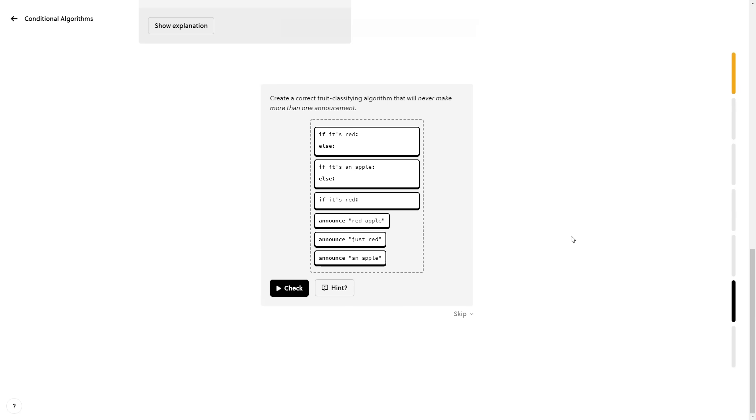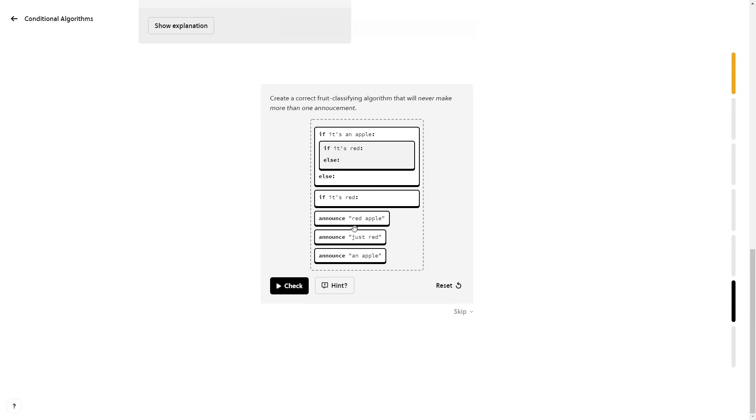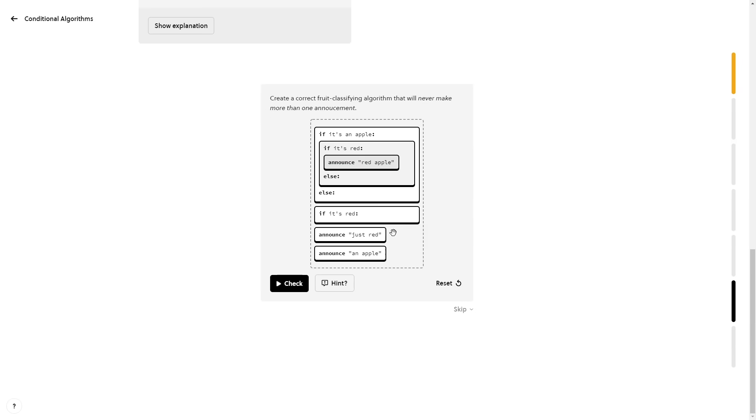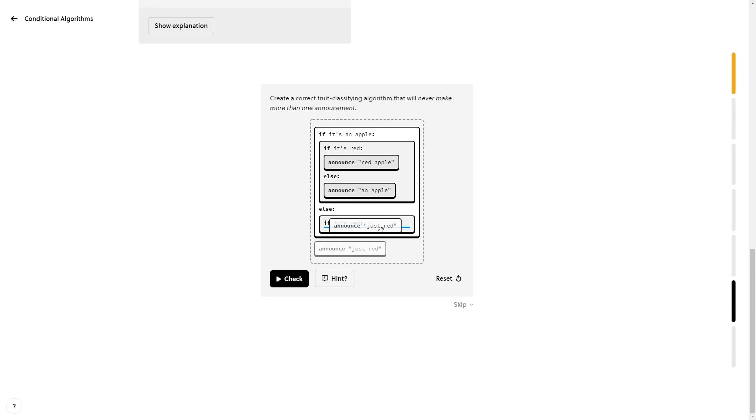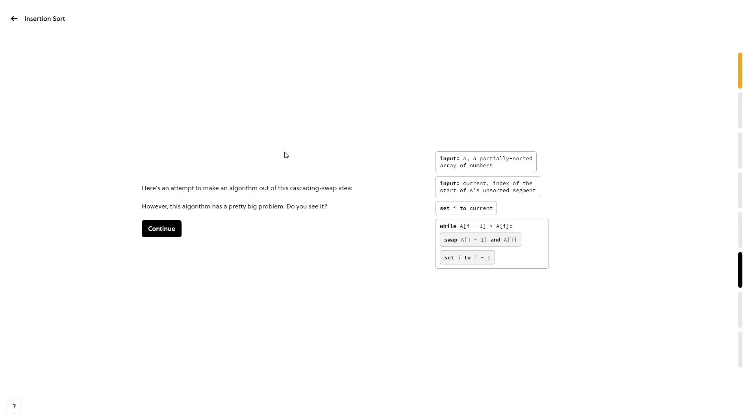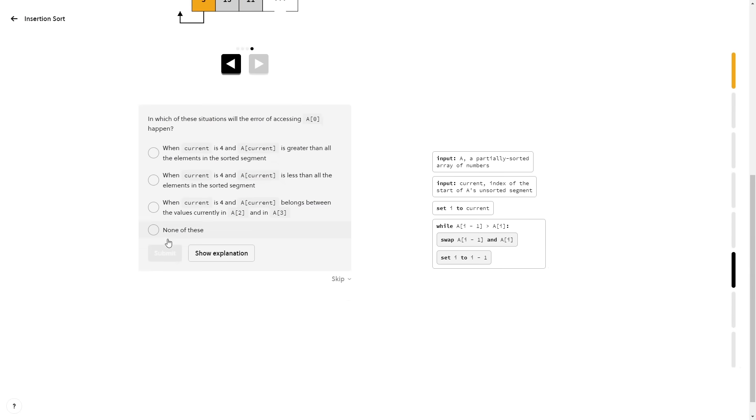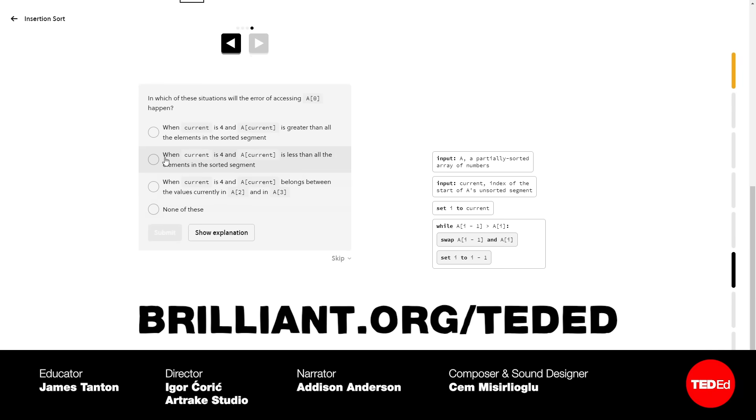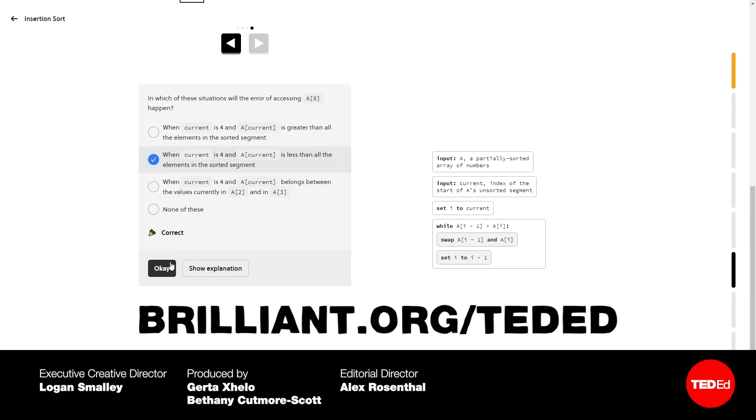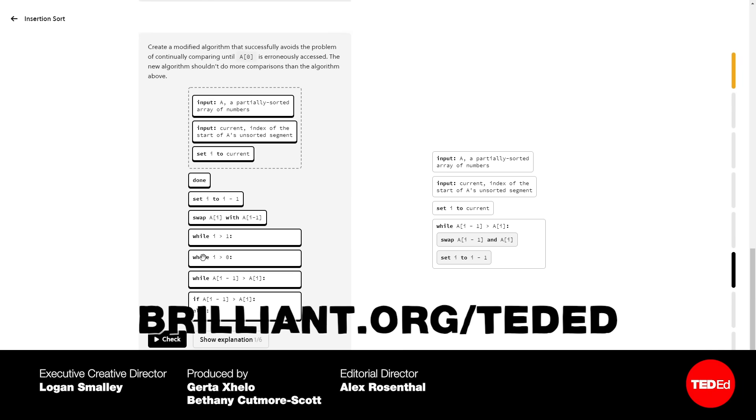Are you interested in learning how to program but aren't sure how to get started? Brilliant can help you begin your journey with their Algorithm Fundamentals course. Learn algorithms interactively by moving around blocks of code and get immediate feedback on your results. This is just one of the many courses on Brilliant, covering topics ranging from geometry to computational biology to artificial intelligence. No matter what your STEM goals are, Brilliant has the tools and resources for you. Visit brilliant.org slash TedEd today and get 20% off a year of interactive STEM learning.